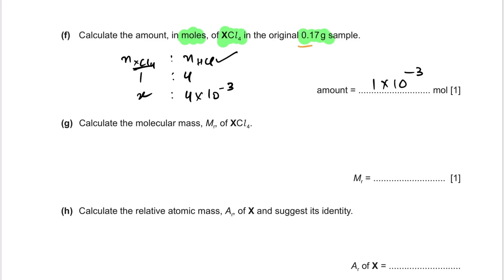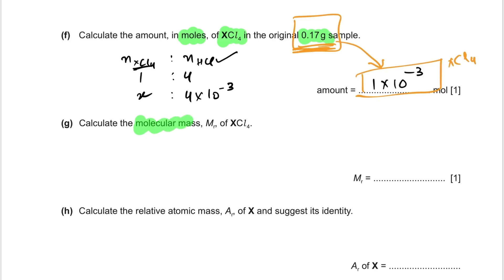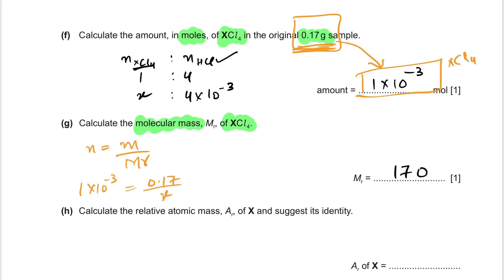We now have the moles of XCl₄ as 1×10⁻³ mol and the mass is already given as 0.17 grams. They ask us to calculate the molecular mass of XCl₄. Using moles = mass/molar mass: MR = 0.17 ÷ (1×10⁻³) = 170. So the molar mass of this group 14 chloride is 170.